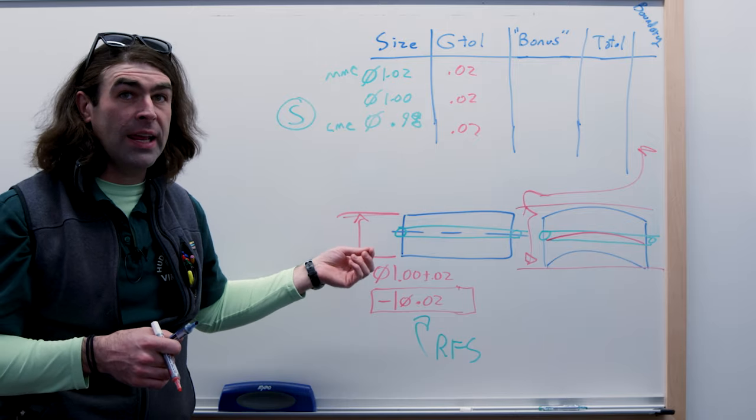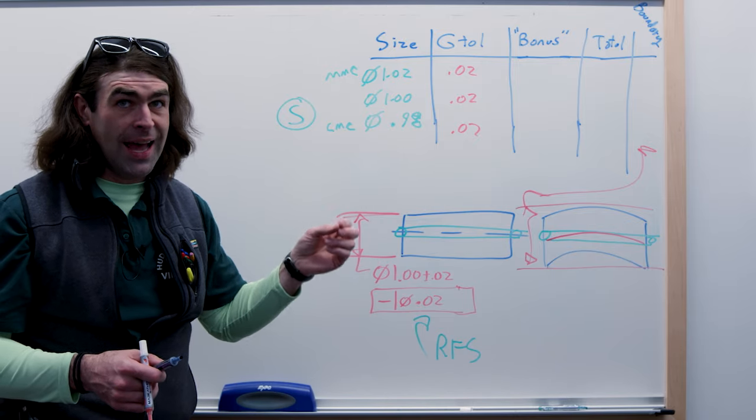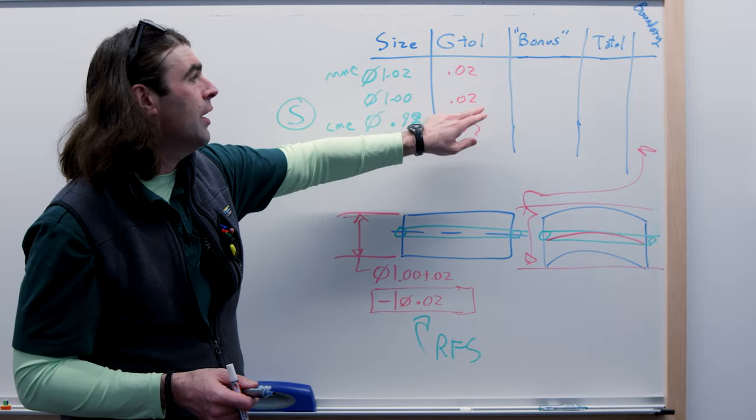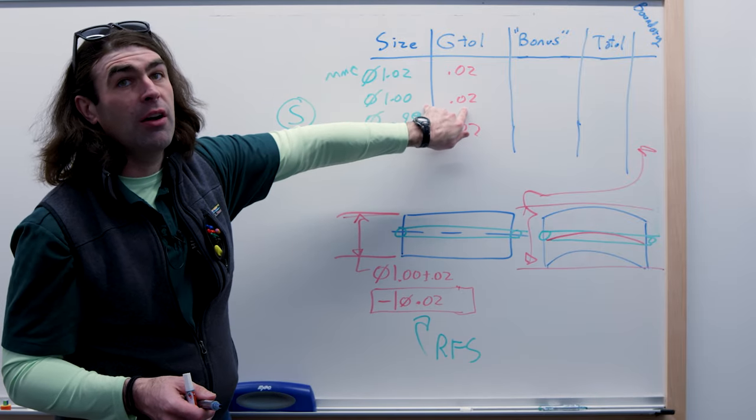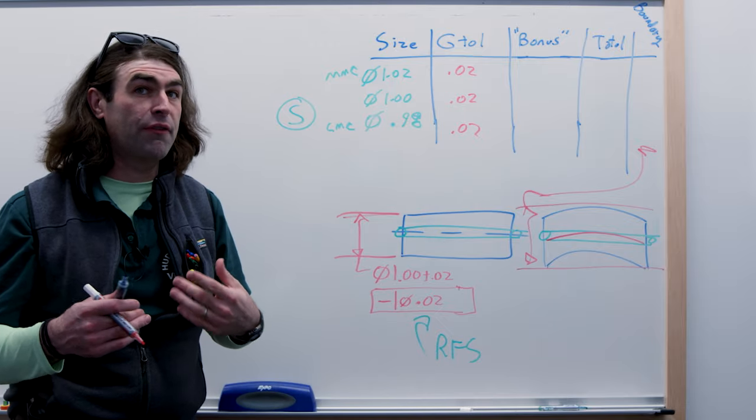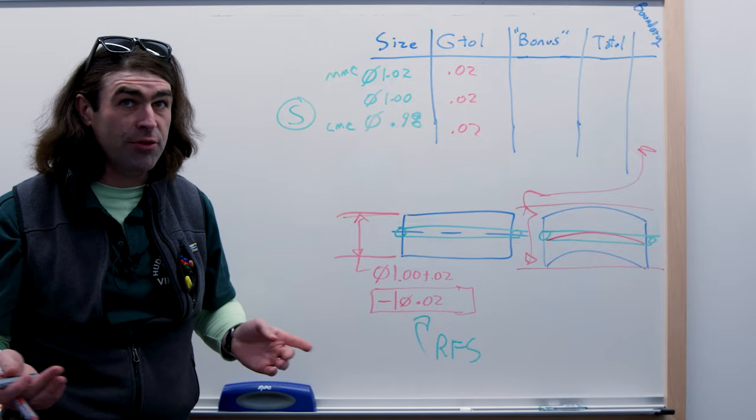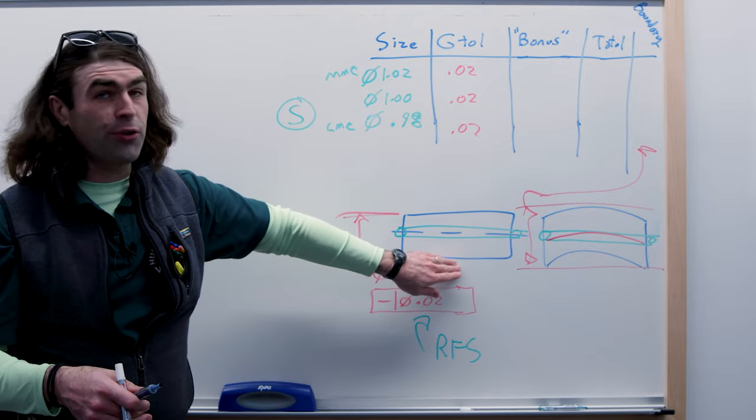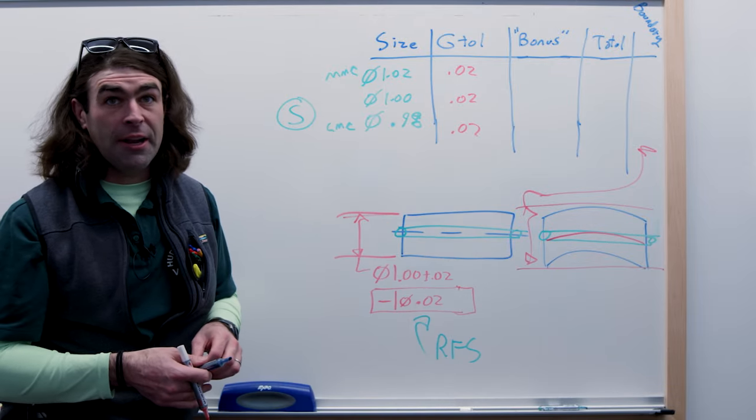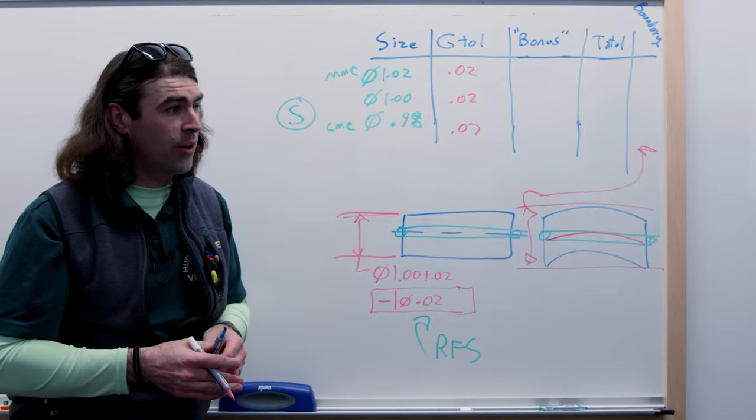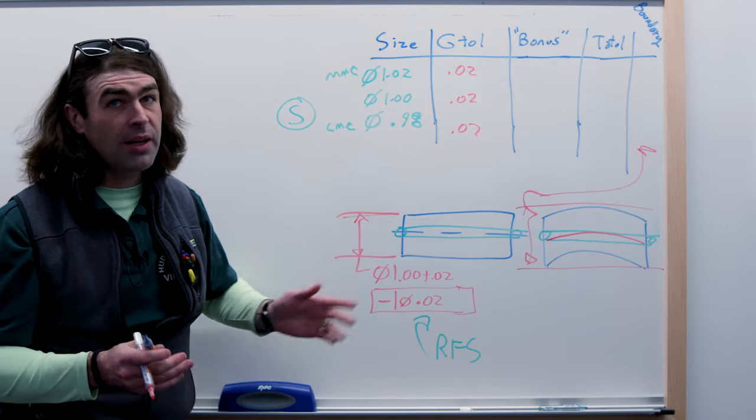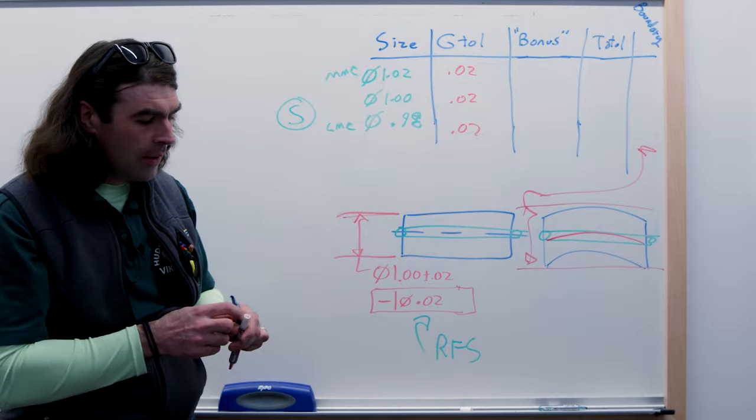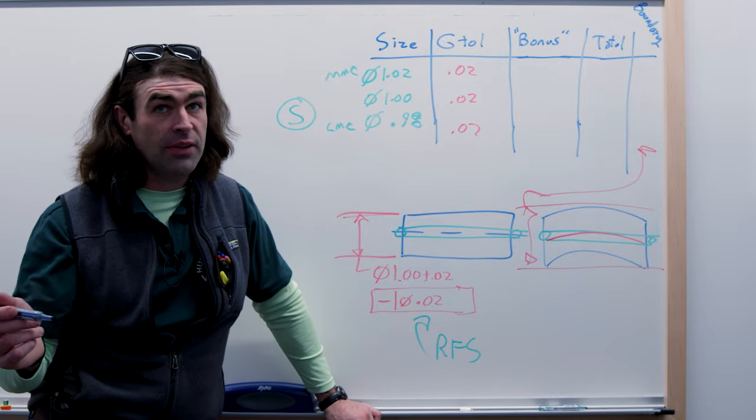This boundary changes depending on the size of the actual produced pin. So if the pin comes in 1.0, our boundary is 1.02. So all that means is we can't use a fixed gauge to measure this - it has to be a variable gauge. For a super simple part like this, that's possible. I mean, off the top of my head I don't know if that's something people are doing, but it's possible. It's not unreasonable.